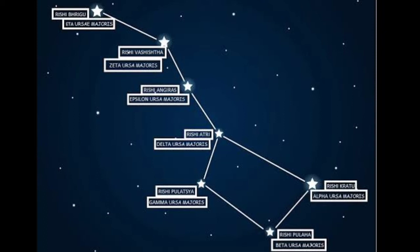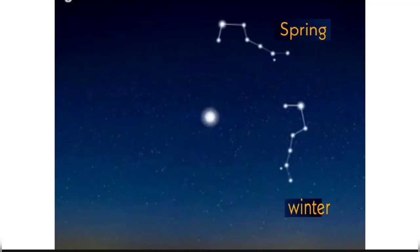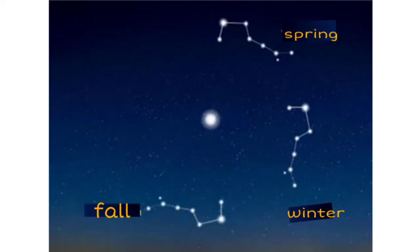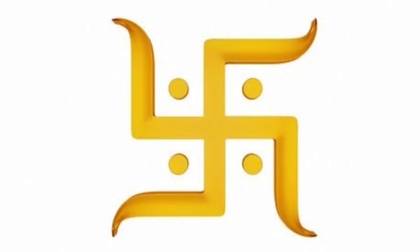In four different seasons it appears in four different manners with respect to the pole star. In the spring season it appears like this, in the winter season it appears like this, in the fall it appears like this, and in the summer season it appears like this. So by combining all four stages we can get the swastik symbol. That is why the swastik is also called the Kala Chakra, or time cycle.